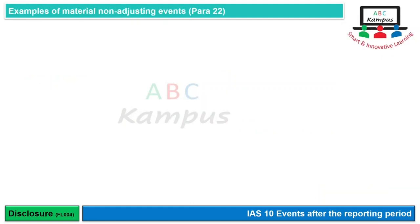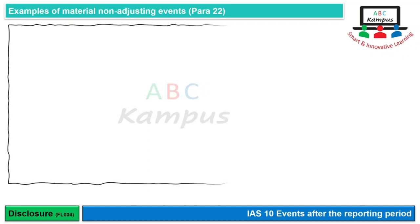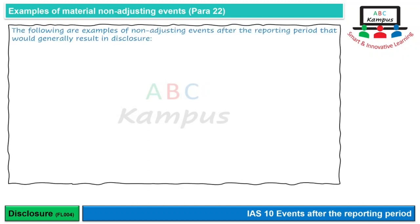ایک interesting point یہ ہے کہ material non-adjusting events کی examples جو original standard میں given ہیں — past exams اور practice questions میں 80-90% جب non-adjusting events سے related کچھ پوچھا جاتا ہے وہ انہی examples میں سے ہوتا ہے۔ ان examples کو properly سمجھنے اور ان کی nature understand کرنے سے questions بڑے آرام سے solve ہو سکتے ہیں۔ Following are examples of non-adjusting events after the reporting period that would generally result in disclosures.